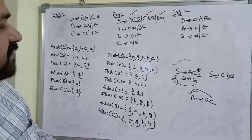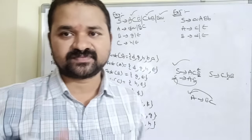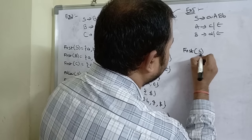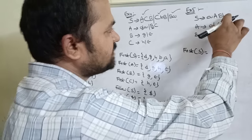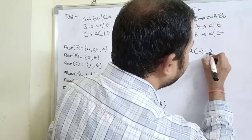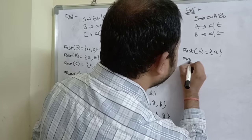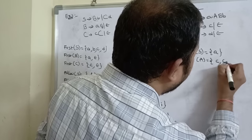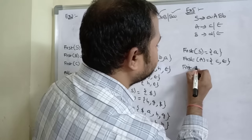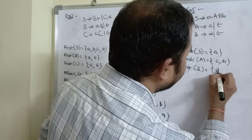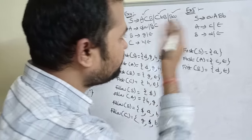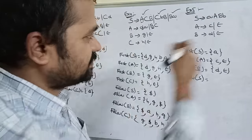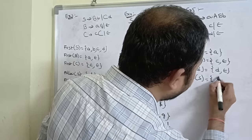Last example: S implies a·A·B·B, A implies c or epsilon, B implies d or epsilon. FIRST of S = {a}. FIRST of A = {c, epsilon}. FIRST of B = {d, epsilon}. FOLLOW of S = {dollar} (start symbol, not in right-hand side).